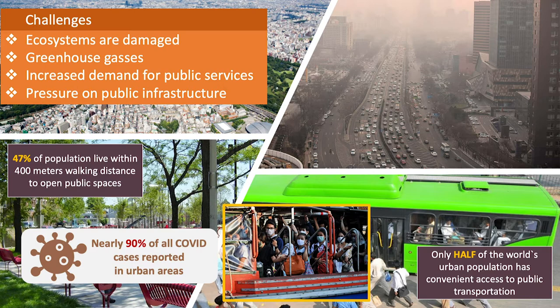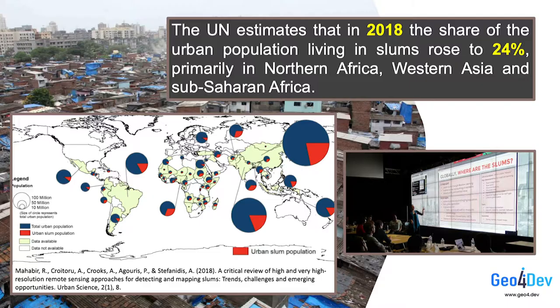Urban areas are also the most vulnerable to the recent COVID-19 pandemic, with nearly 90% of all COVID cases reported in urban areas. With rapid urbanization outpacing investments in infrastructure development, housing, and basic services, the share of the population living in slums is now rising. The UN estimates that in 2018, the share of the urban population living in slums rose to 24%, primarily in Northern Africa, Western Asia, and Sub-Saharan Africa.